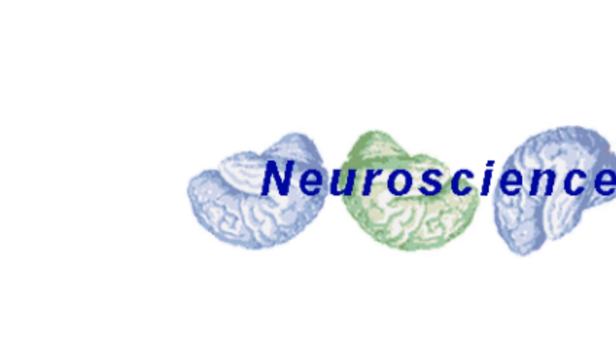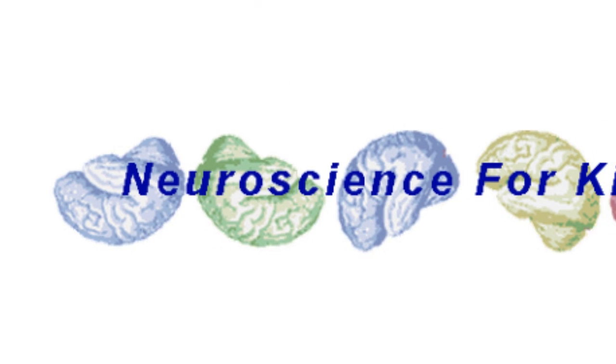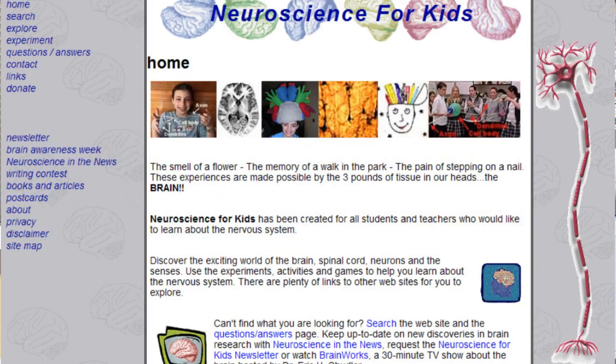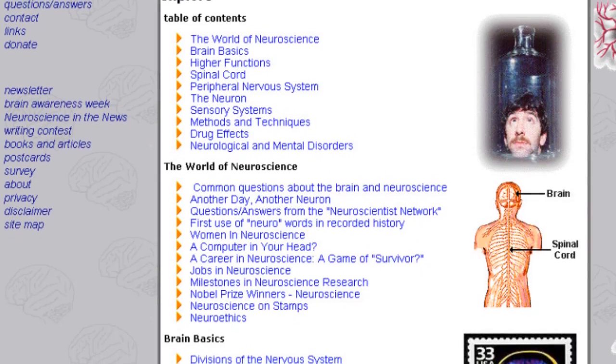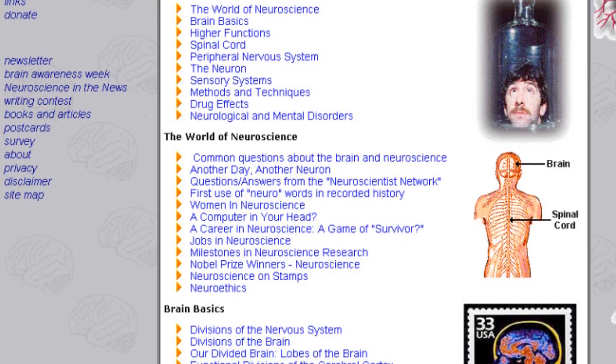The Neuroscience for Kids website was created back in 1997 through a grant by the National Institutes of Health. That grant allowed me to develop a resource for students, for teachers, for parents, so that they could learn more about the brain. The site is divided up into a couple major sections.